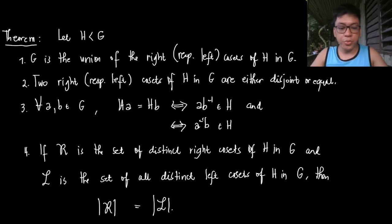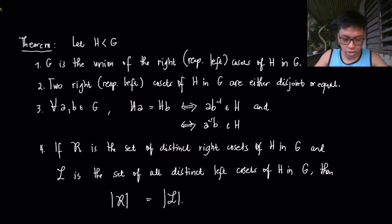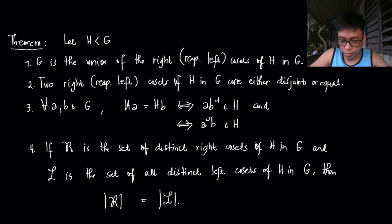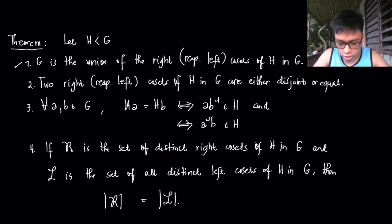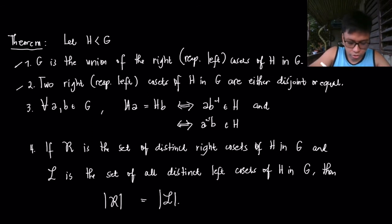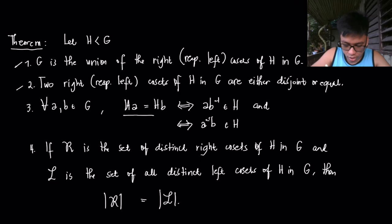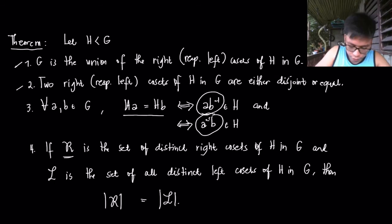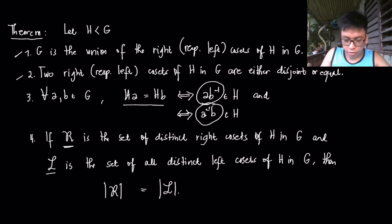We will consider a theorem here as part of the discussion for left and right cosets. Considering that H is a subgroup of G: (1) G is the union of the right and left cosets of H in G; (2) the right (respectively left) cosets of H in G are either disjoint or equal; (3) for every A, B in G, HA = HB implies AB⁻¹ is in H and A⁻¹B is in H; and (4) the number of distinct right cosets equals the number of distinct left cosets.